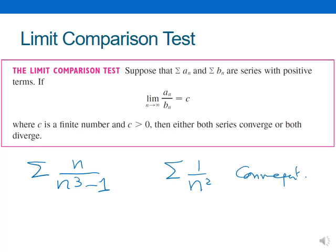I'm still going to use this comparison series sigma bn, and I'll get the ratio an over bn, then take the limit as n tends to infinity and find the value of this limit. If this limit is a finite number and this number is greater than 0, then either both series converge or both series diverge.